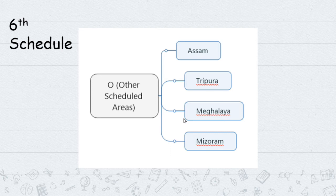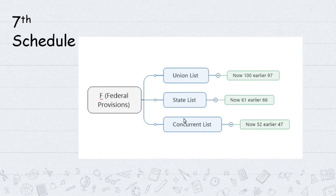The Seventh Schedule contains federal provisions: Union List, State List, and Concurrent List. At the time of Constitution adoption, the Union List had 97 items, the State List had 66 items (originally 61-66 range noted), and the Concurrent List had 47 items (now 52). These cover the distribution of legislative powers.